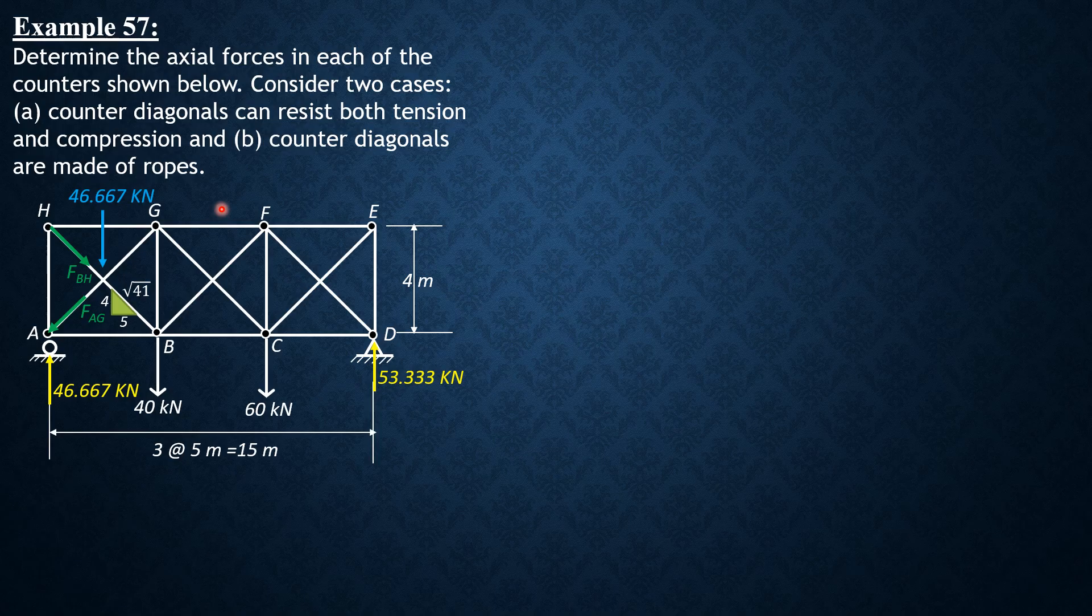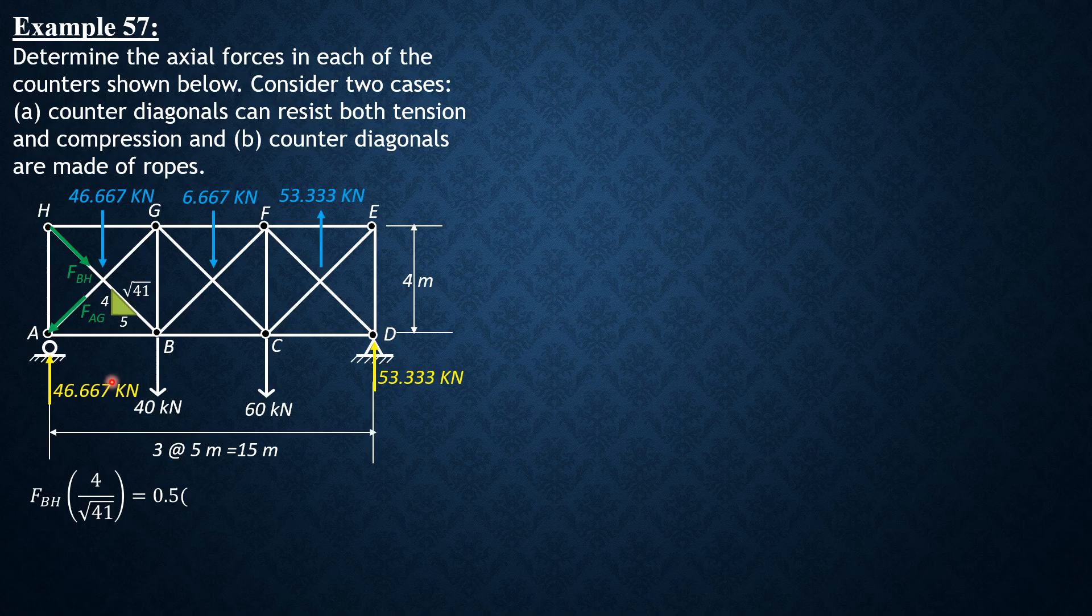In panel BC, the shear is downward also because this is 46.67 and this is only 40, so 6.667 kN downward. So the force in CG is tension. And the panel shear in CD is 46.667 kN minus 40 minus 60, so it should be upward, plus 53.333 kN. Or 46.67 kN plus 53.33 kN minus 40 minus 60 is zero. So it should be upward if we analyze it from left to right. But if you analyze it from right to left, then this should be downward. And if analyzed from right to left, the forces will be the same. So DF should be in compression and CE will still be in tension.